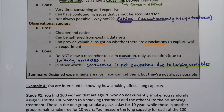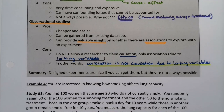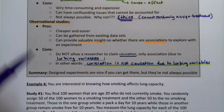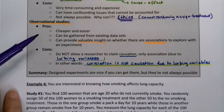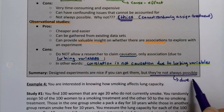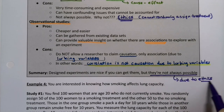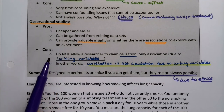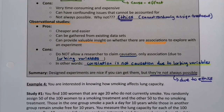A lot of times designed experiments are nice, but there are many times they're not possible. For example, smoking — one of the reasons smoking was allowed in public for so long is that it's unethical to say, 'I'm going to make you smoke a pack a day for the next 10 years.' It's not always possible due to ethics, so all you've got to rely on is observational studies. That's what the smoking cigarette companies hid behind — they'd get in front of Congress and say, 'We don't know because all we have is association.'